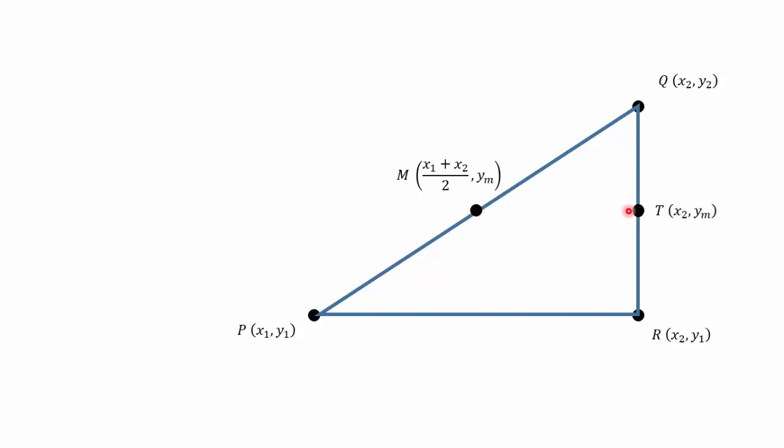So I plot a point T directly horizontal from M that lies on the line QR. T has x coordinate x2 because it lies on the line QR, so it has the same x coordinate as each point there. And y coordinate ym because it is directly horizontal from M.